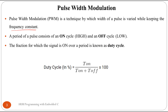If we vary the width of a particular pulse, it will change the on and off time. The period of a pulse consists of on time and off time. The fraction for which the signal is on over the period is called the duty cycle. The formula for duty cycle is: T_on divided by (T_on plus T_off), multiplied by 100.